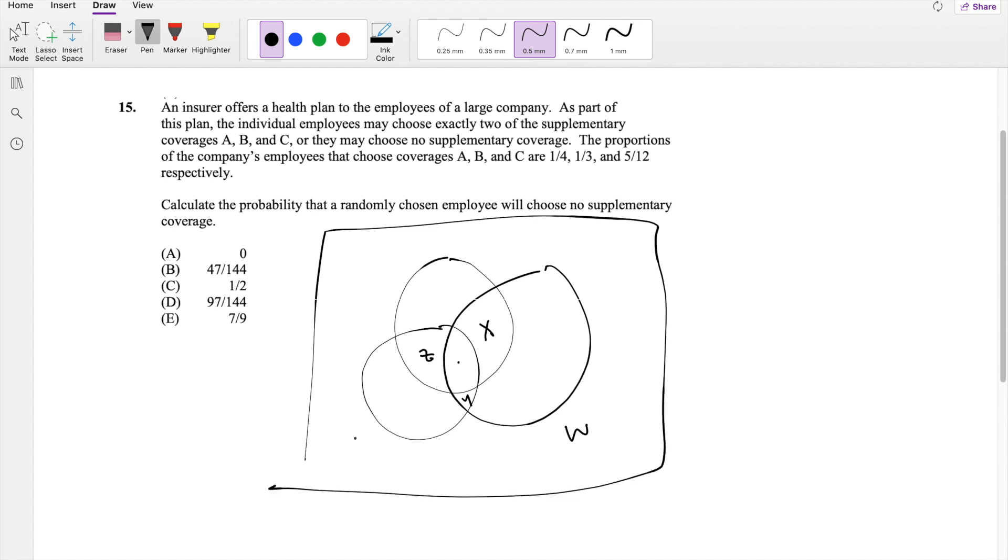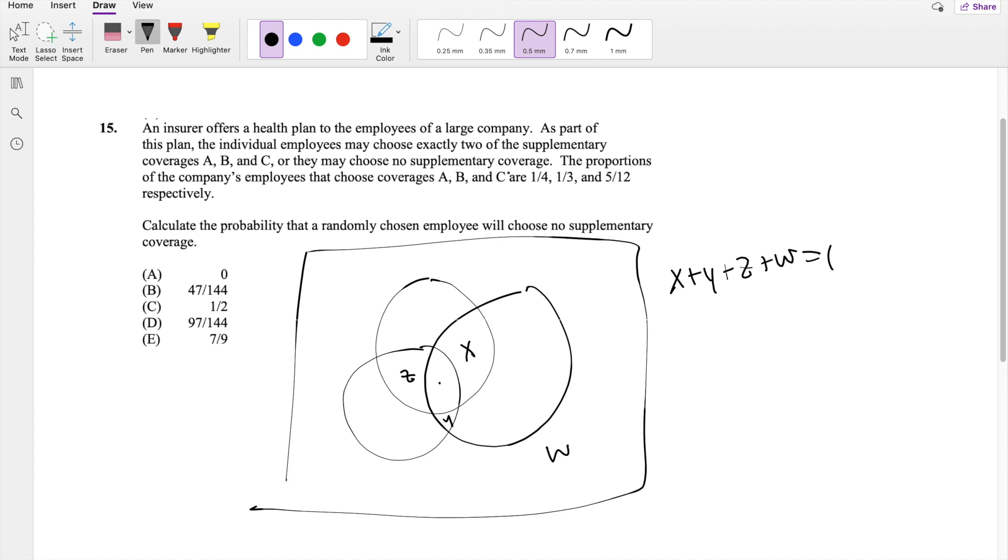So we know that the probability of X plus Y plus Z plus W has to equal one. They also give you these informations here. They give you the probability of A, which is equal to one-fourth. And we know that probability of A is defined by the probability of X plus Z, so that's X plus Z.